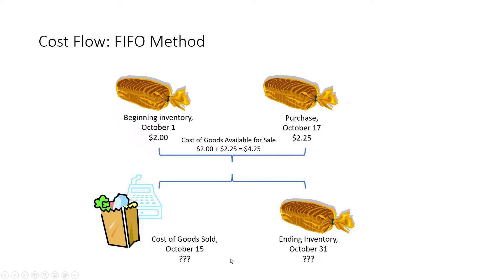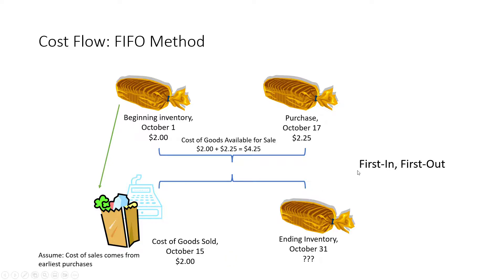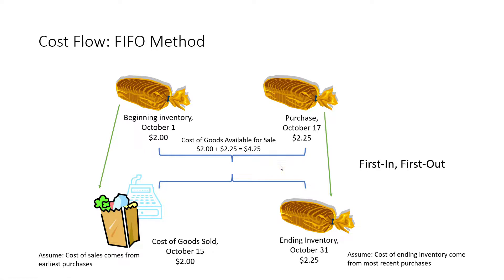One of those available assumptions is called FIFO, which is first in first out. The assumption with FIFO is the units I'm going to sell first — the first out — are going to come from my earliest or first in purchases. So here I assume my cost of goods sold, my one unit I sold, is going to come from the earliest purchase, October the 1st at $2. Therefore, my ending inventory, since the earliest units are sold first, must come from my latest or most recent purchases, so ending inventory would be valued at the October 17th purchase at $2.25.